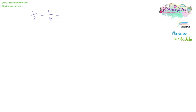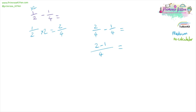A half minus a quarter. Here I'm just going to times this one by two to make it four. So one over two times two equals two over four. The sum we're going to be doing is two over four minus one over four, or two minus one over four, giving one over four.